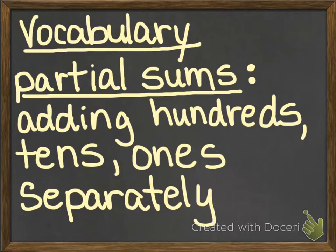Our vocabulary starts with partial sums, and this is a method that you should have learned back in second grade if you were in the Greenfield schools. If not, then I'm showing it to you today. Partial sums is when we are adding hundreds, tens, and ones separately, and that should make sense in just a few minutes.